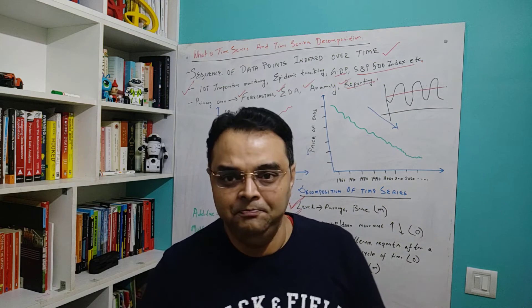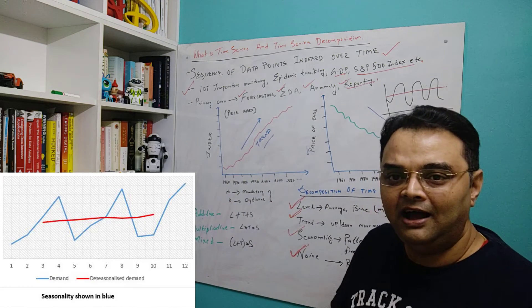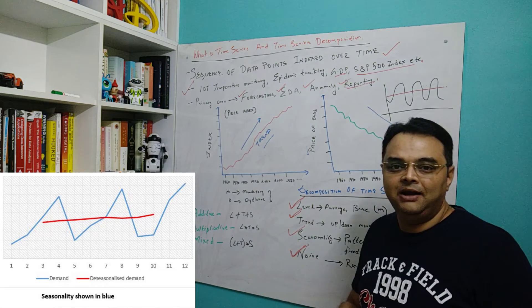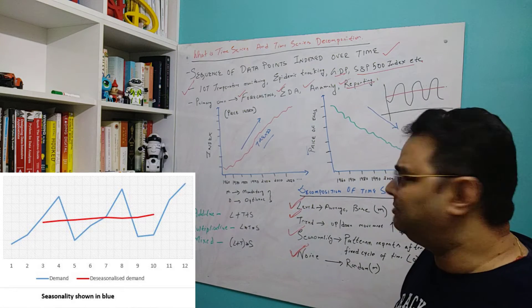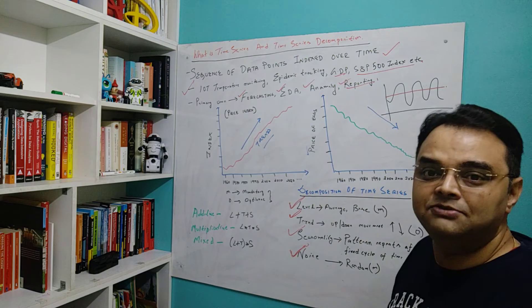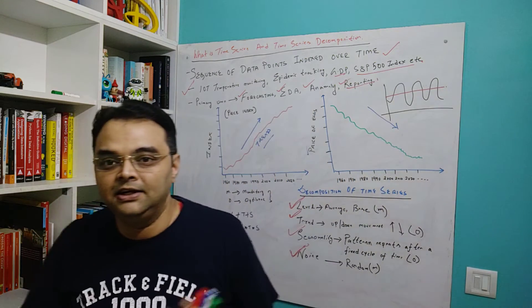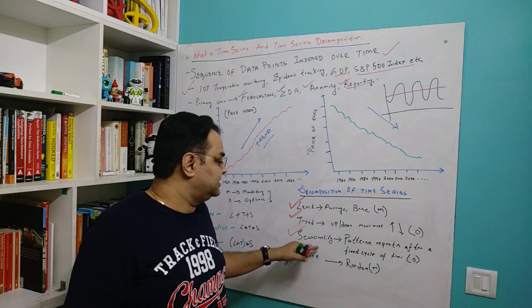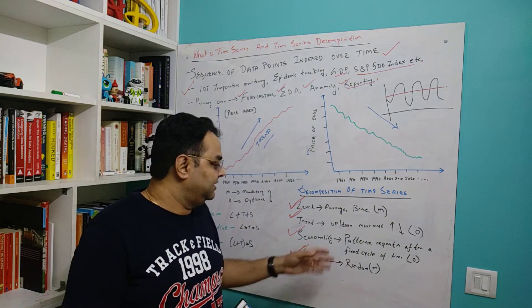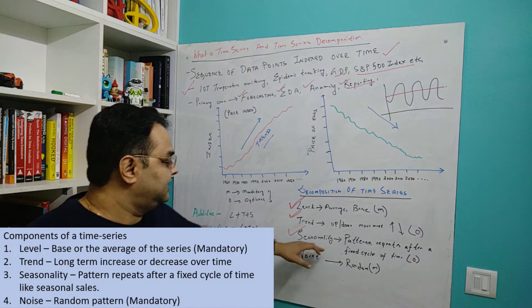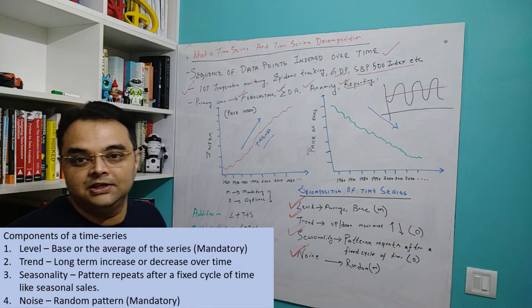That leaves us with seasonality. Now seasonality is interesting because seasonality is nothing but the pattern that repeats after a fixed scale of time. Certain businesses are seasonal, certain are not, and that's the reason seasonality is not mandatory in time series. But if it is there, it becomes very important because your business tends to repeat in a particular cycle. There are certain kinds of services or products which are seasonal in nature by design, and there are certain cases where it becomes seasonal.